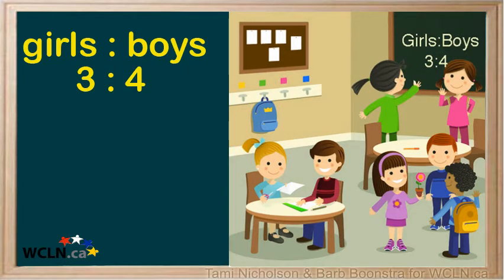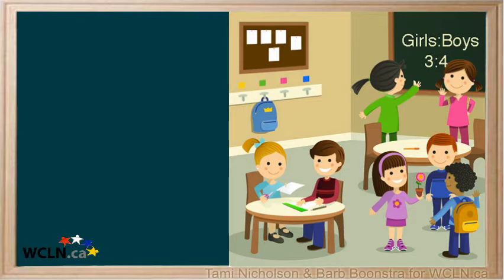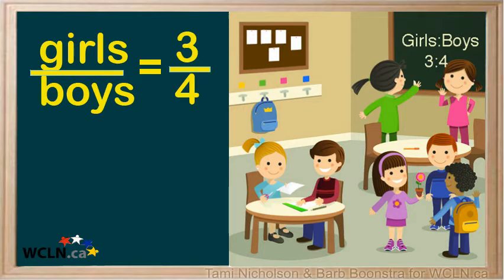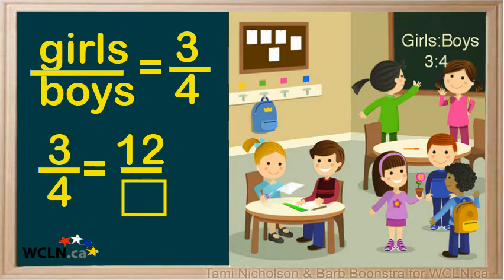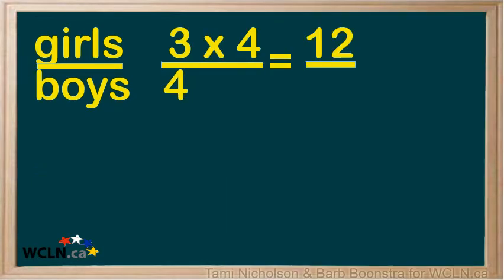The ratio of girls to boys is 3 to 4. Write the ratio as a fraction: 3 over 4. Fractional form makes the ratio easier to solve. We know that there are 12 girls in the class, but we don't know how many boys there are. Create an equivalent ratio: 3 over 4 equals 12 over something. We multiply 3 by 4 to get the 12 girls, so we must multiply the boys by 4 as well to keep the ratios equivalent.